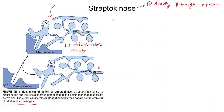Remember, streptokinase is fibrin non-specific. It does not act only near the thrombus but will also cause degradation of circulating fibrin. Streptokinase is not specific to the fibrin present near the thrombus; it will also act upon fibrin circulating in the blood. So it is fibrin non-specific and will produce a systemic thrombolytic state.